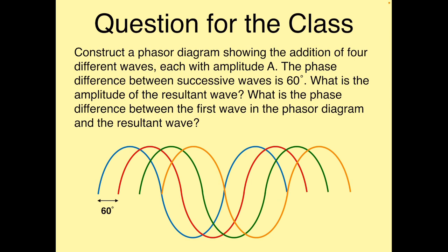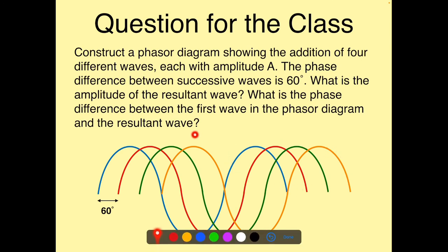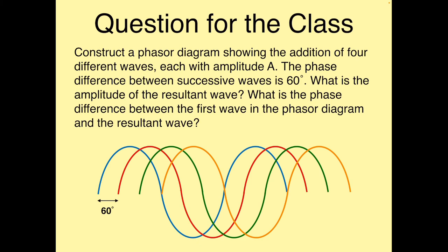Here's the problem from the chapter 35 lecture. We're going to construct a phasor diagram showing the addition of four waves, each with amplitude A. The phase difference between successive waves is 60 degrees. Using the phasor diagram, find the amplitude of the resultant wave, and the phase difference between the first wave and the resultant. Pause the video and try it.